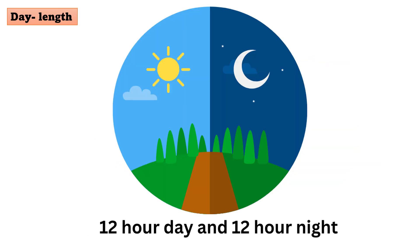Day length: The length of day and night is consistent throughout the year, with roughly 12 hours of daylight and 12 hours of night.